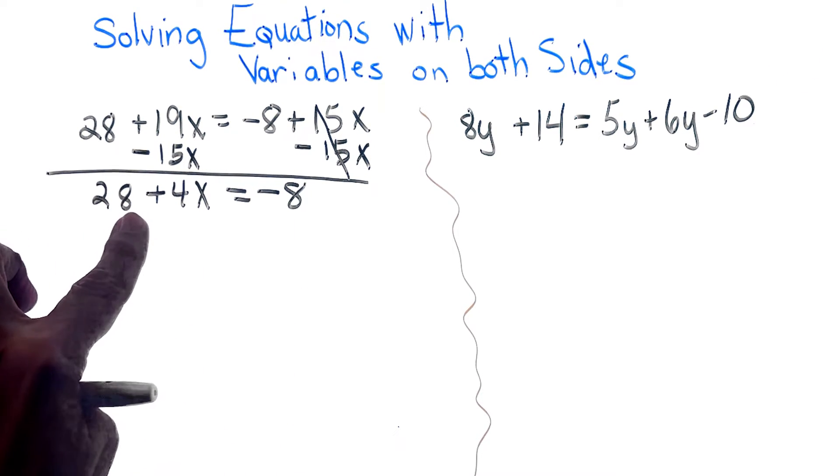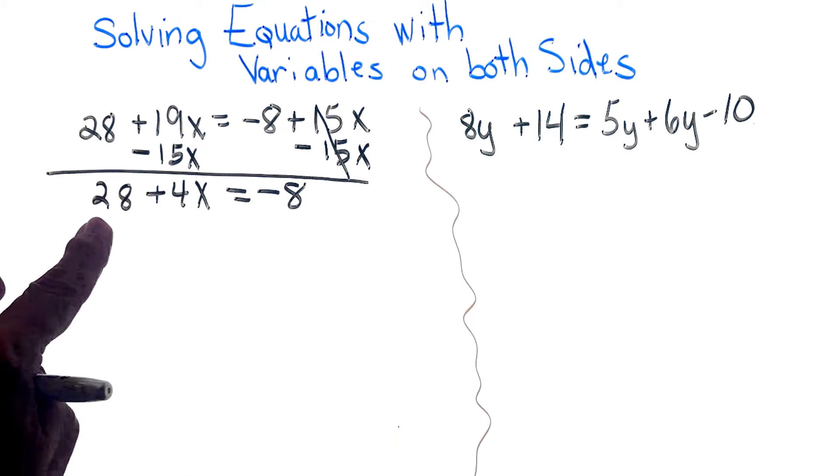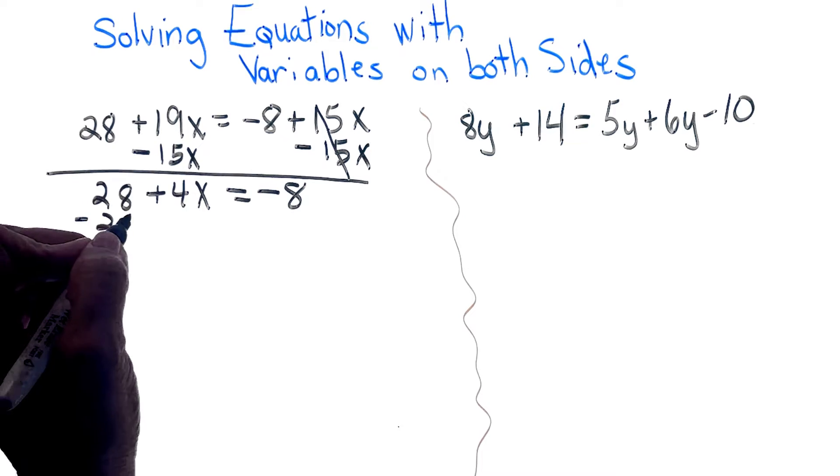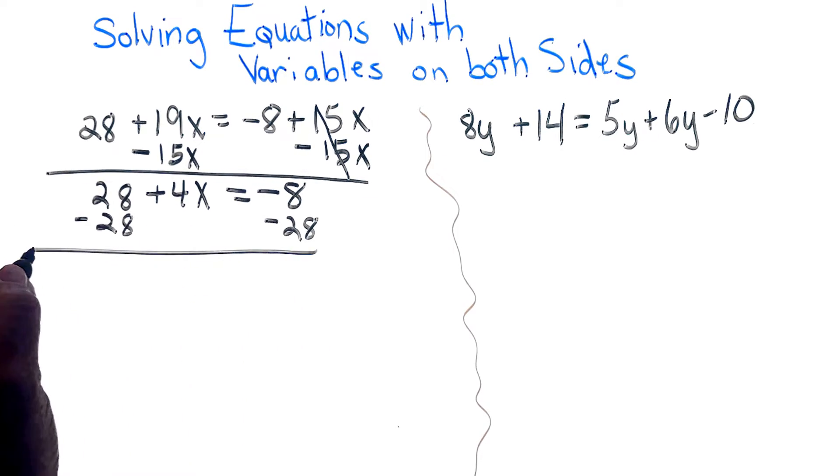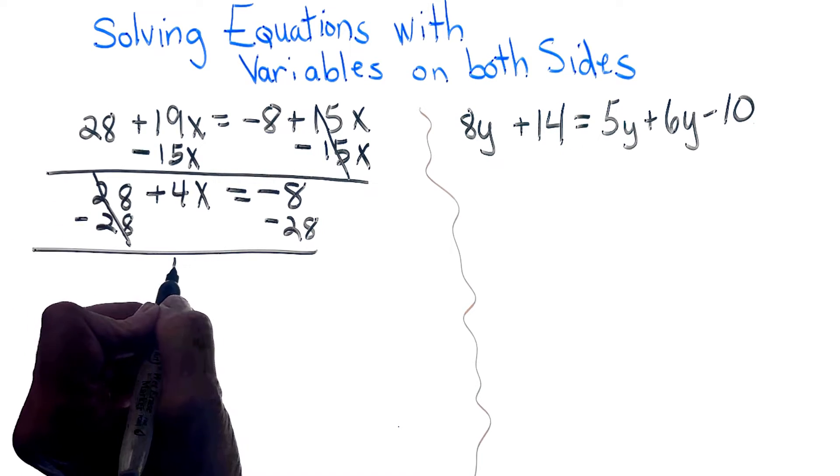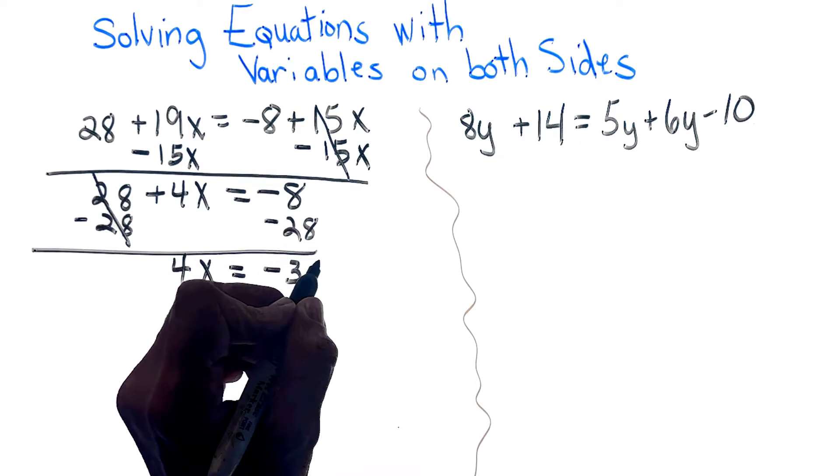I always add or subtract to get the variable by itself. So since this is a positive 28, I'm subtracting 28 from both sides of the equation. And this cancels out. You get 4x equals a negative 36.